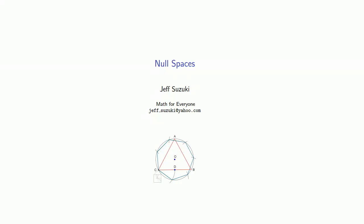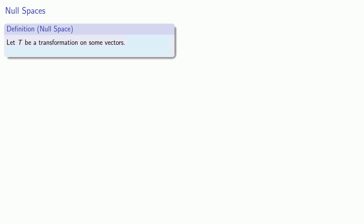The null space is an important idea associated with any transformation. Let T be any transformation on some vectors. If T sends some vector v to the zero vector, then we say that v belongs to the null space, or the kernel, of T. The null space of T is usually designated Null(T) or ker(T).